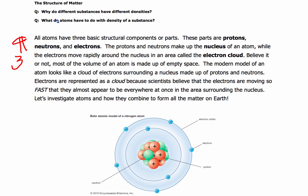Okay, so the modern model of an atom looks like a cloud of electrons surrounding a nucleus made up of protons and neutrons. So, electrons are represented as a cloud, because scientists believe that the electrons are moving so fast that they almost appear to be everywhere at once in the area surrounding the nucleus. So, let's take a look at atoms and how they combine to form all the matter on Earth. Okay, let's mark this paragraph.